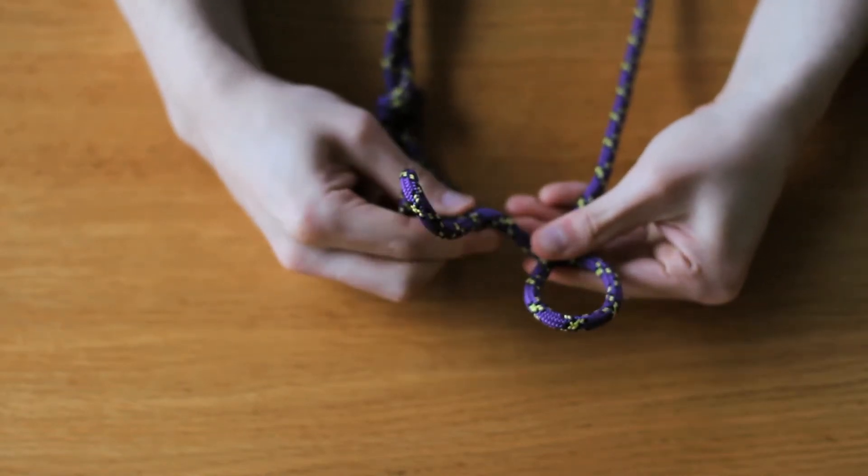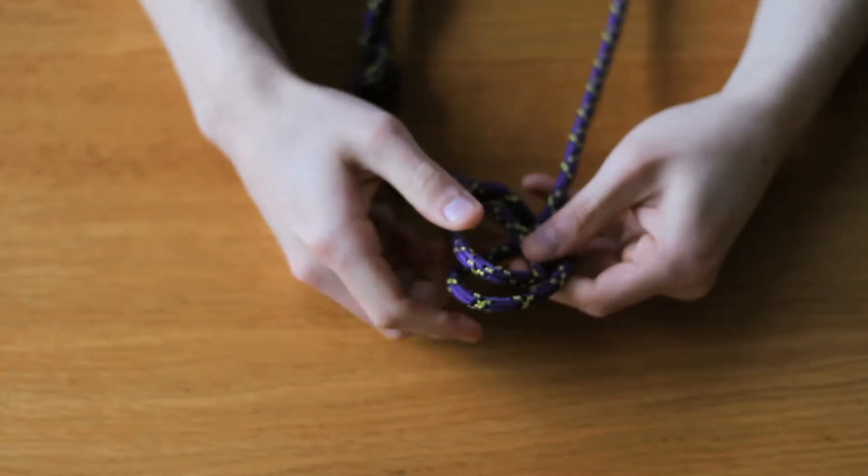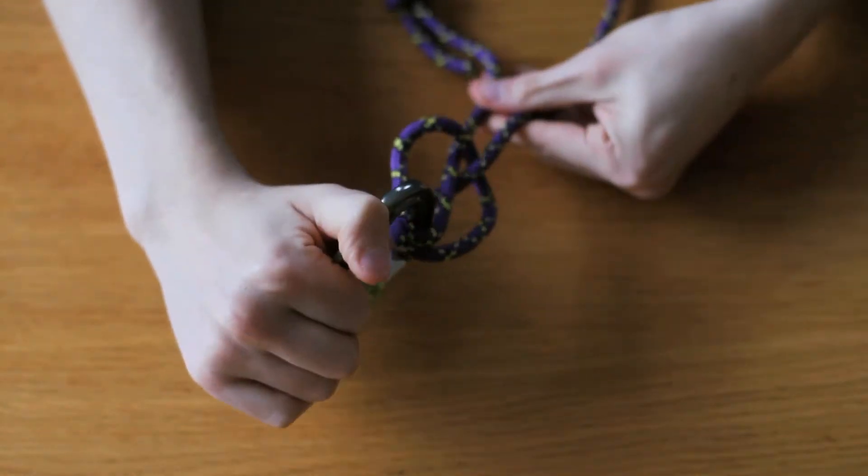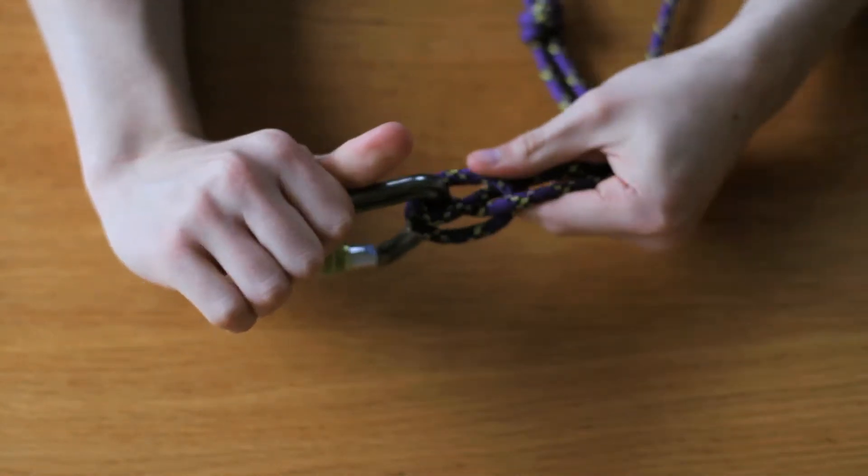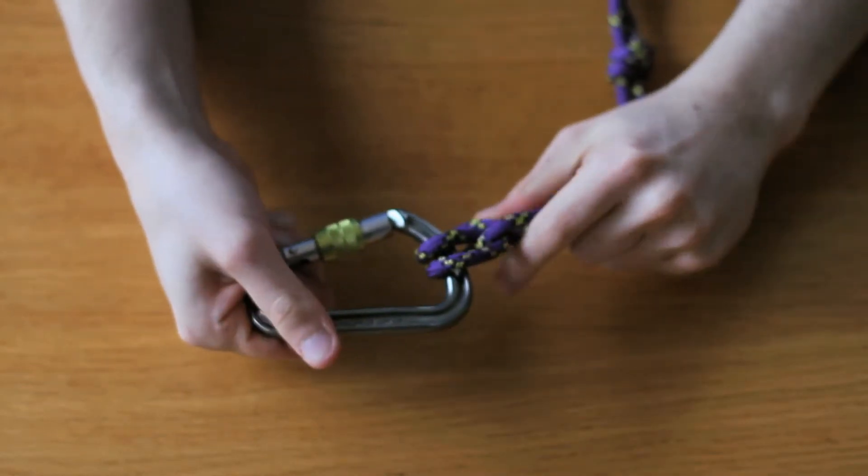The second loop I'm going to lay over the first loop like that and place a locking carabiner in there. Then I'm just going to pull it tight. Just like that. And that is basically what the clove hitch should look like.